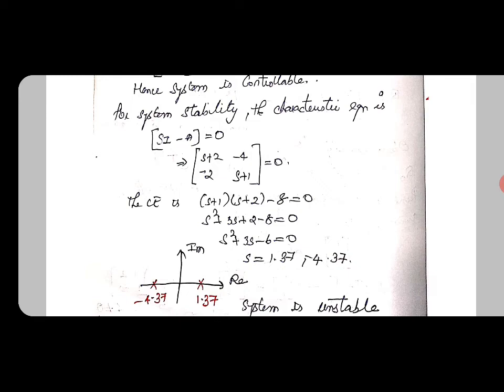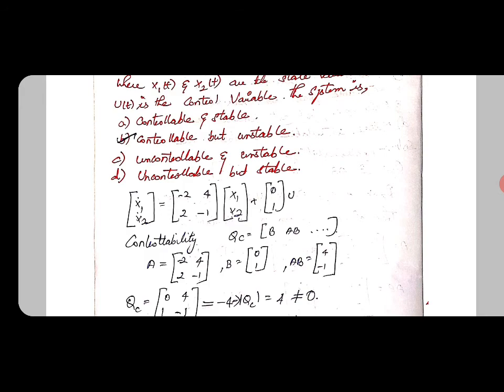We can clearly say that the system is completely unstable. So the option will be option B, which is the given system is controllable but unstable.